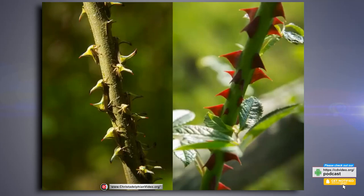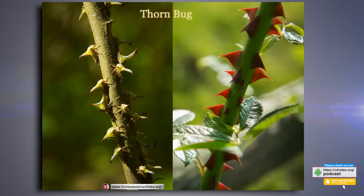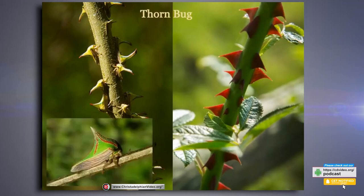Here we've got two branches, both appearing to have thorns on. But if you look closer on the one on the left, we have a branch with something called a thorn bug. It's got red tips on all of the insects, so when predators are trying to land somewhere, they're not going to want to land on that branch because it appears to be a thorny branch. The bright green and bright red wards predators off from landing there.